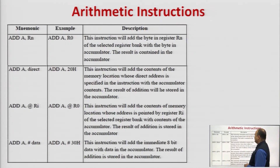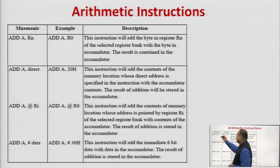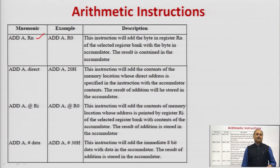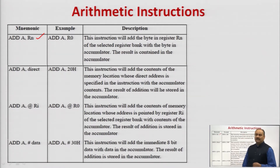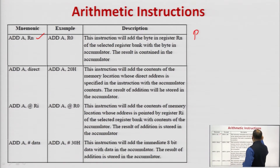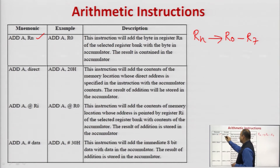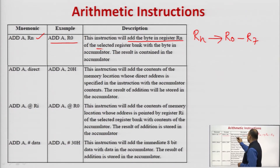The ADD instruction can be used in assembly language programming in the following forms. The first is ADD A, Rn. In the 8051 microcontroller we have 8 registers belonging to a register bank. We have 4 register banks: Bank 0, Bank 1, Bank 2, and Bank 3, each with eight 8-bit registers. In place of Rn we can use R0 to R7. For example, ADD A, R0 adds the byte in register R0 of the selected register bank with the byte in the accumulator, and the result is stored back into the accumulator.